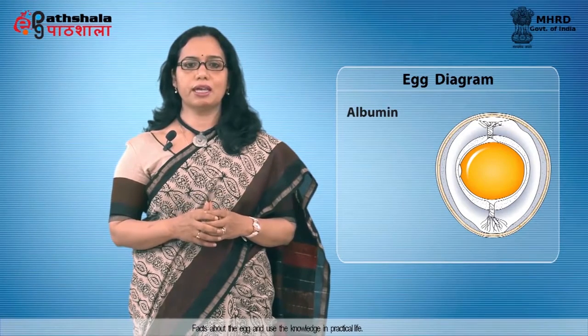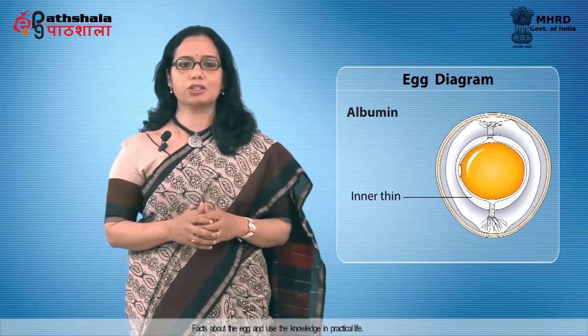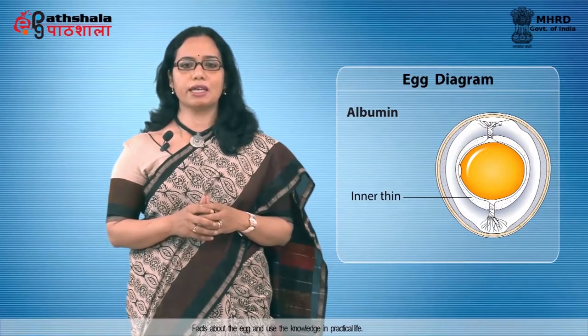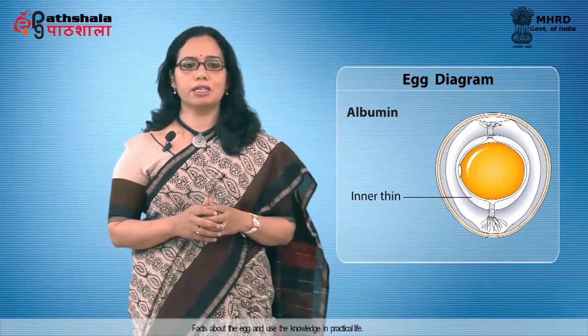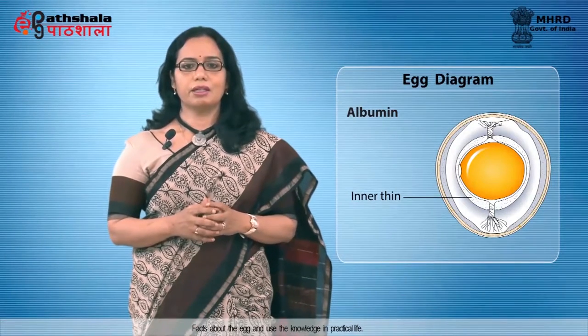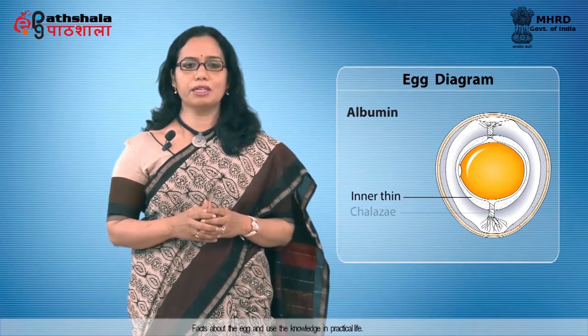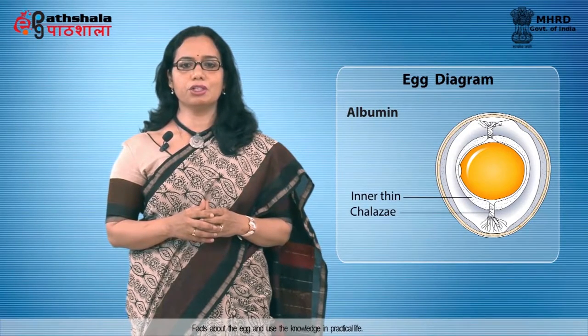Albumin or egg white is the clear aqueous material with a greenish yellow cast caused by the pigment ovoflavin. The inner thin white envelops the egg yolk and forms a twisted cord-like structure which holds the egg yolk in position, called the chalazae. The function of albumin is to guard the yolk and provide nutrition to the embryo for growth.